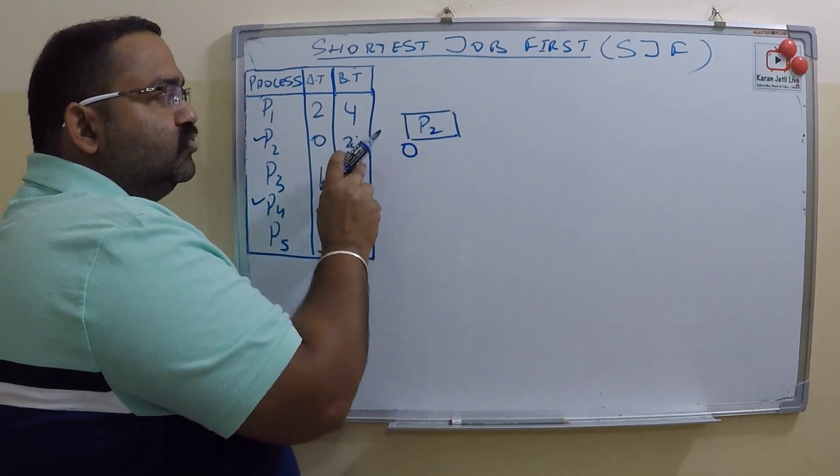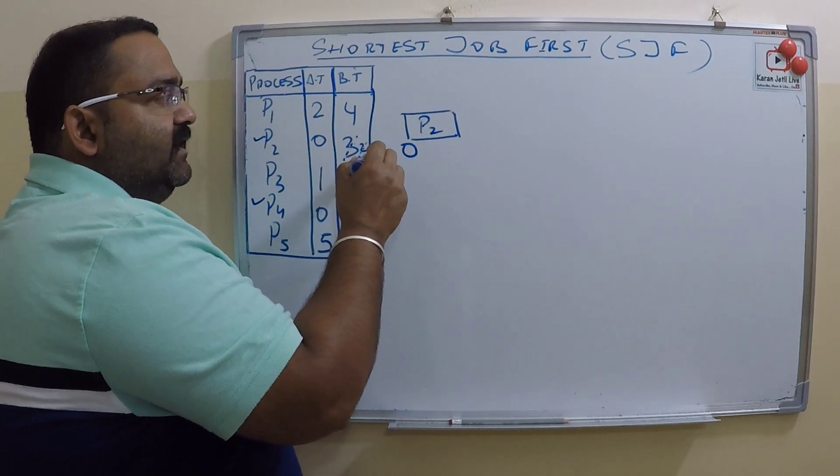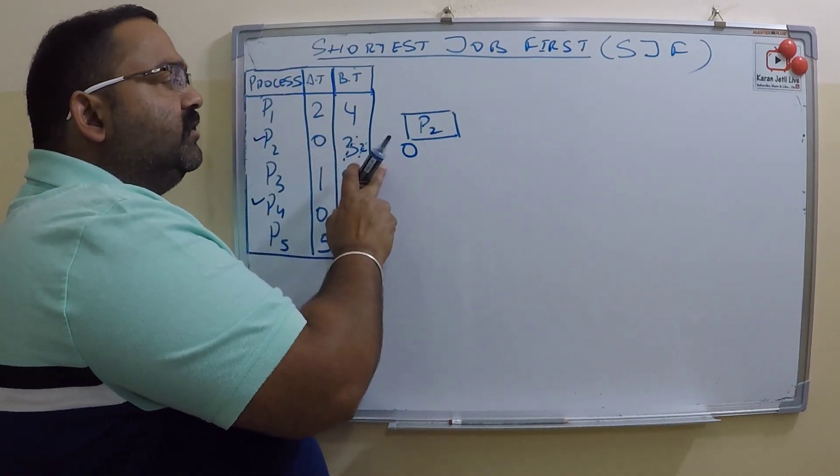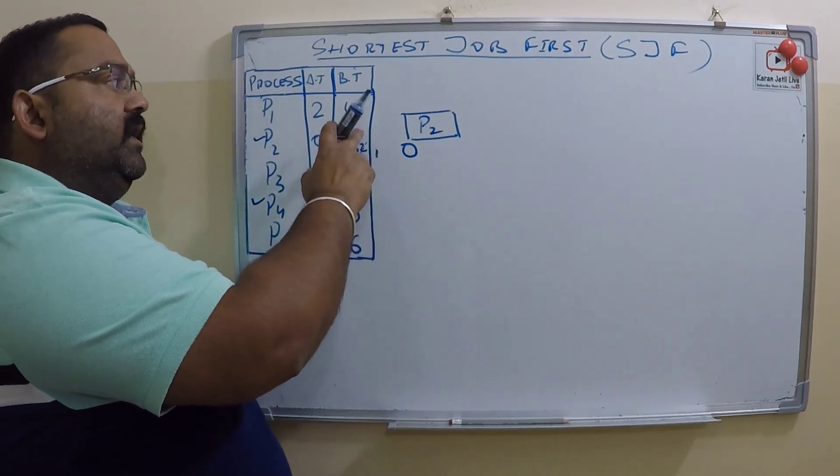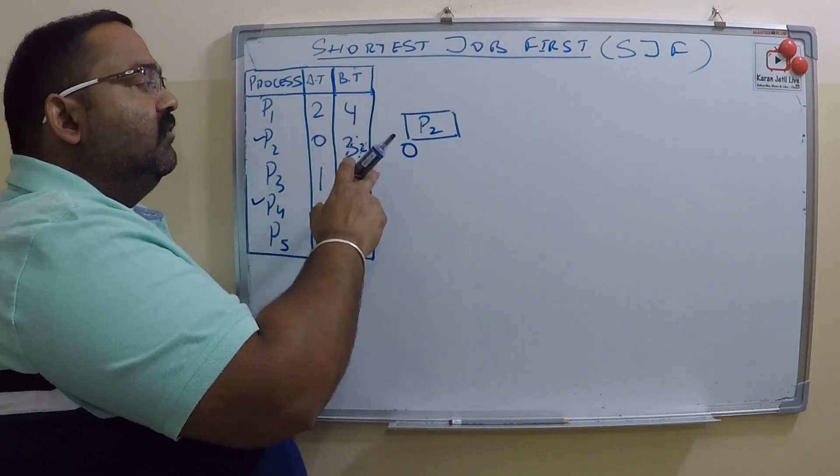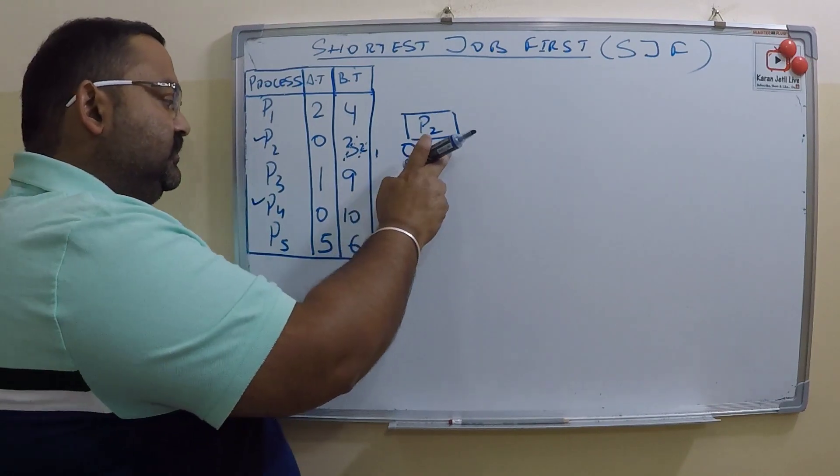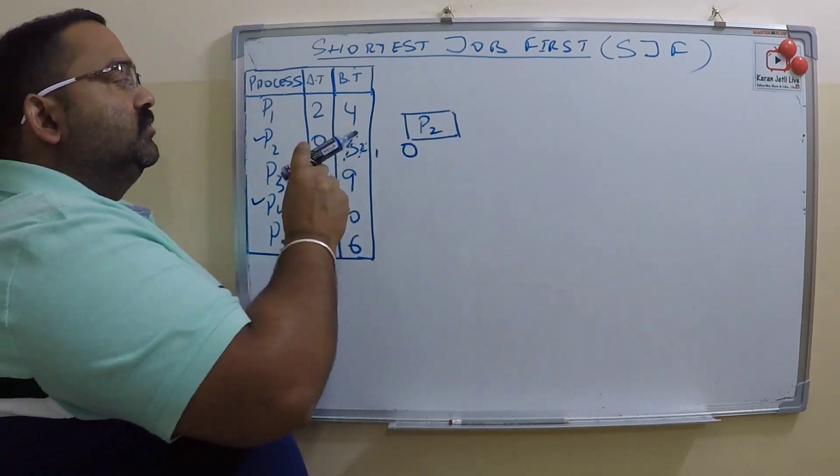P1 comes. Here remaining time is one and the burst for P1 is four. So what CPU will do? It will continue with process P2.